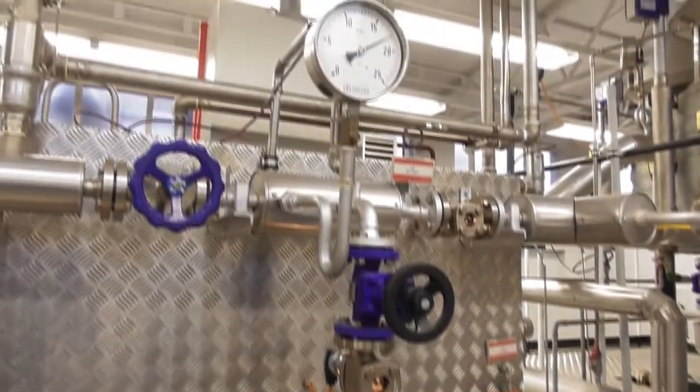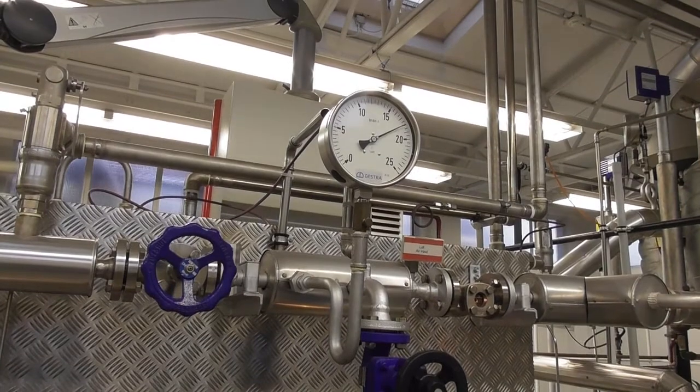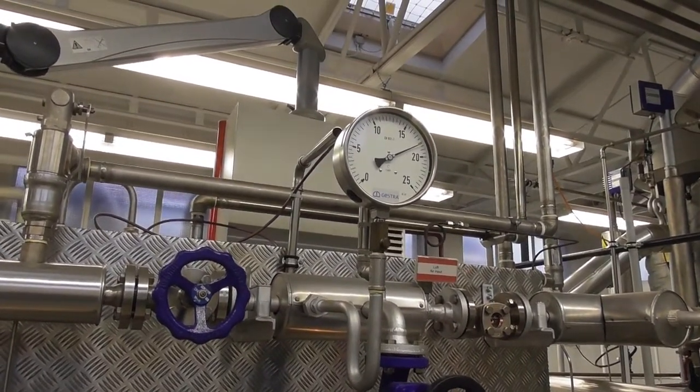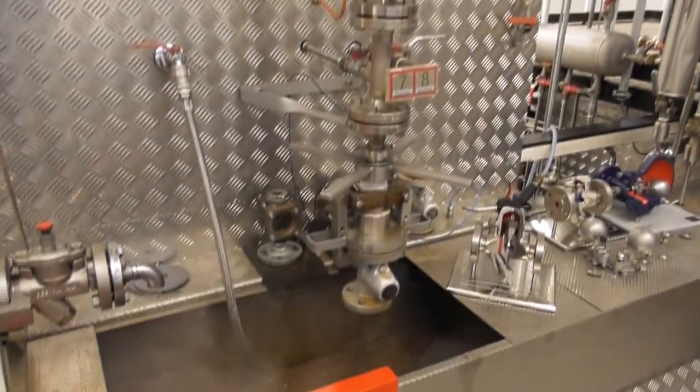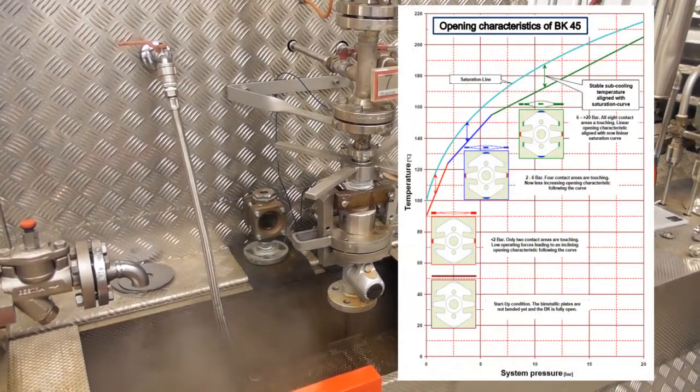An interesting fact I want to mention here is that the BK will be able to operate at different pressures without any required adjustments. For example, one and the same BK can work at 2 bar and also at 20 bar with no need to change anything on the internal parts. How does that work?